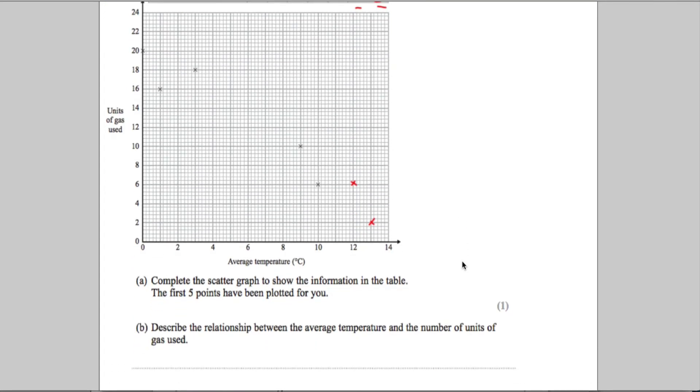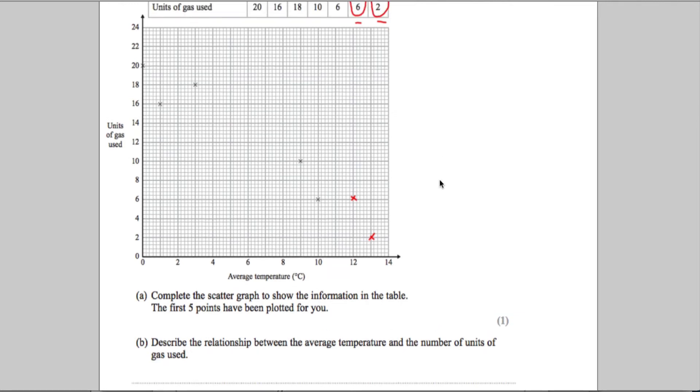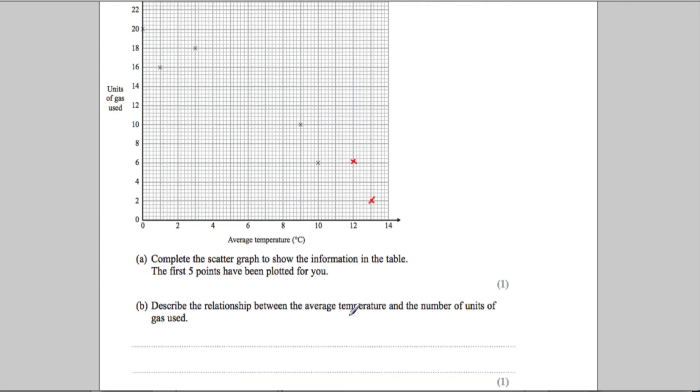Part B is to describe the relationship between the average temperature and the number of units of gas. Notice it asked for the relationship, not the correlation, so I'm going to describe it in the context of the question. What I can see is as the average temperature increases, units of gas decrease. It's a negative correlation.